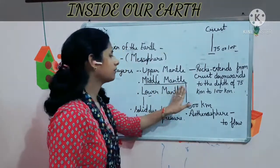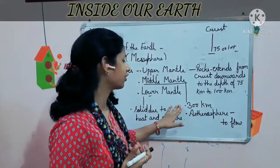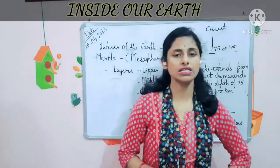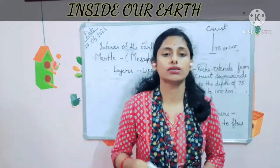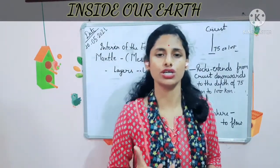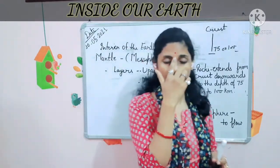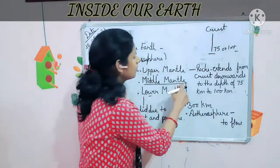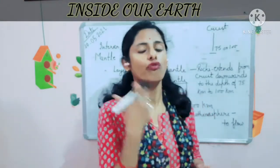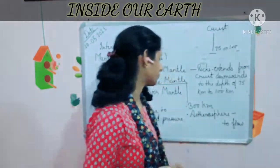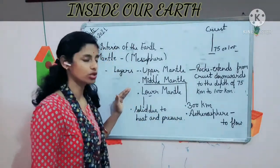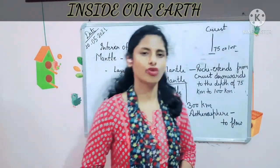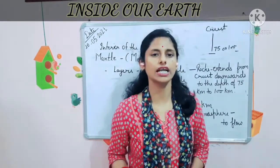The middle mantle has an average thickness of 300 kilometers and is also known as the asthenosphere — meaning 'to flow.' This refers to the molten magma that flows due to heat and pressure conditions, associated with volcanic eruption. The lower mantle is the solid part, as due to the extreme heat and pressure, that part has become very solid.